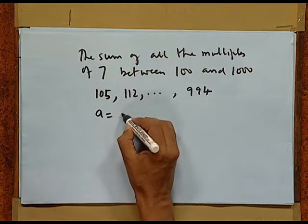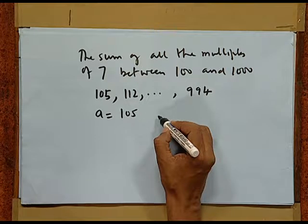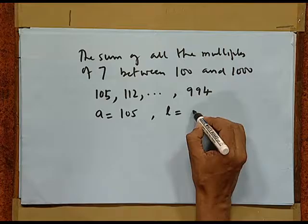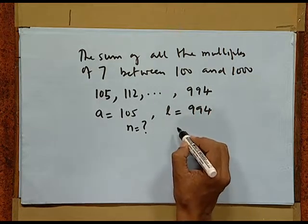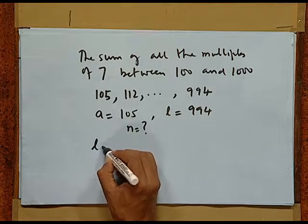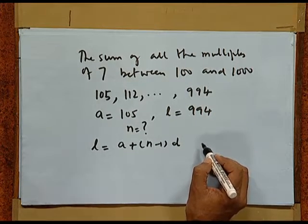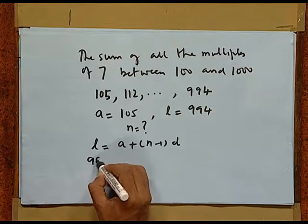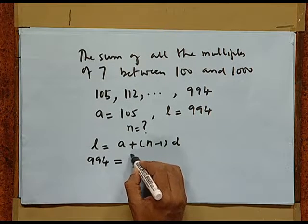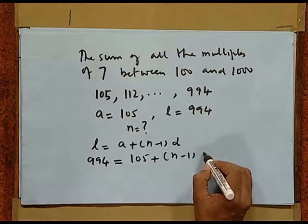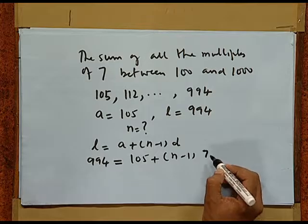Thus, the first term, that is a, is 105. The last term is 994. Here, our unknown is the number of terms. n is not given to us. Suppose we assume it to be n. Then, we also note that the last term is merely a plus n minus 1 times d. Hence, we have 994 equals 105 plus n minus 1 times 7, which is d.